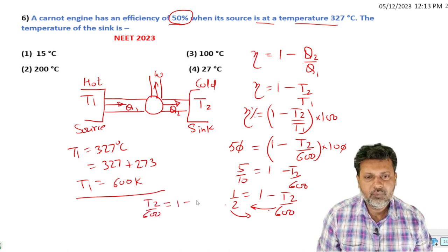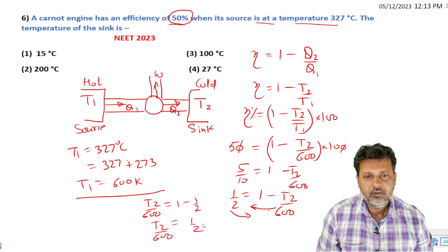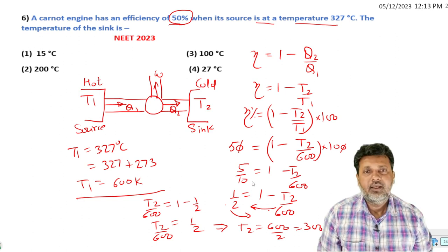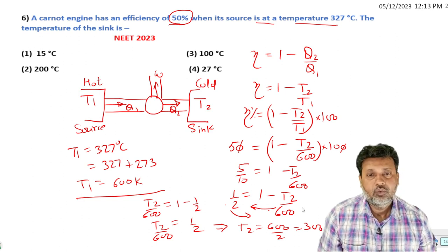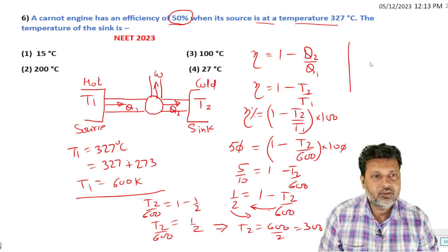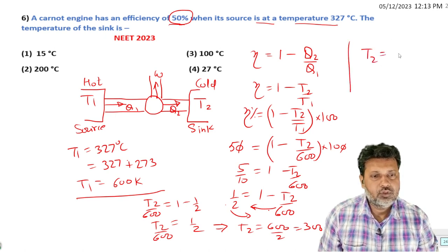T2 by 600 equals one minus one by two, which means one by two. So T2 by 600 equals one by two. T2 equals 600 divided by two, which means 300 Kelvin. Now let's convert to degrees Celsius.